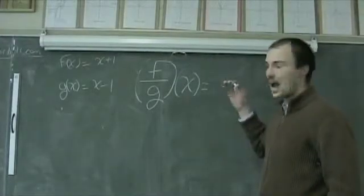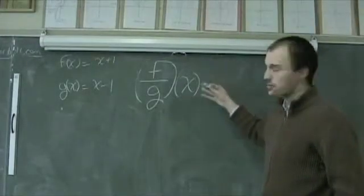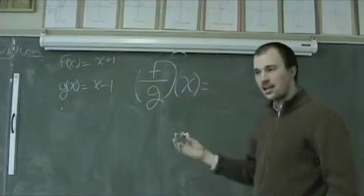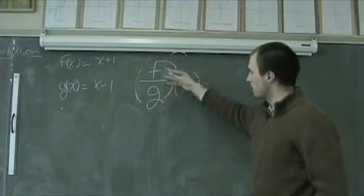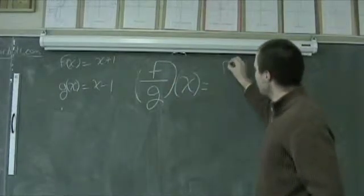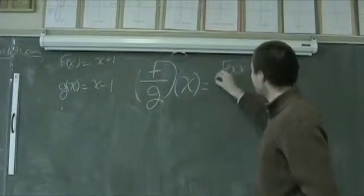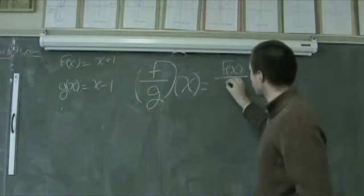Again, working with arithmetic compositions of functions, we've got f divided by g of x, and as we've seen before, we simply replace these with f of x for our f functions, and we're dividing that by g of x.